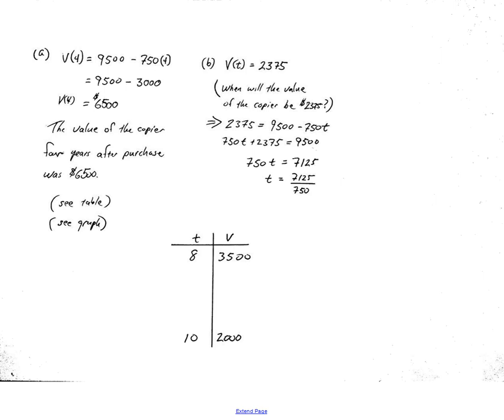The next question was asking about V(t) = 2375, and what does it mean? What I'm looking for here is when will the value of the copier be $2,375? Here's how I know that's the question: the V is known as 2375, the t is unknown. That's the thing that I need to find out. So when t is unknown, I say when, what time will the value of the copier be $2,375?